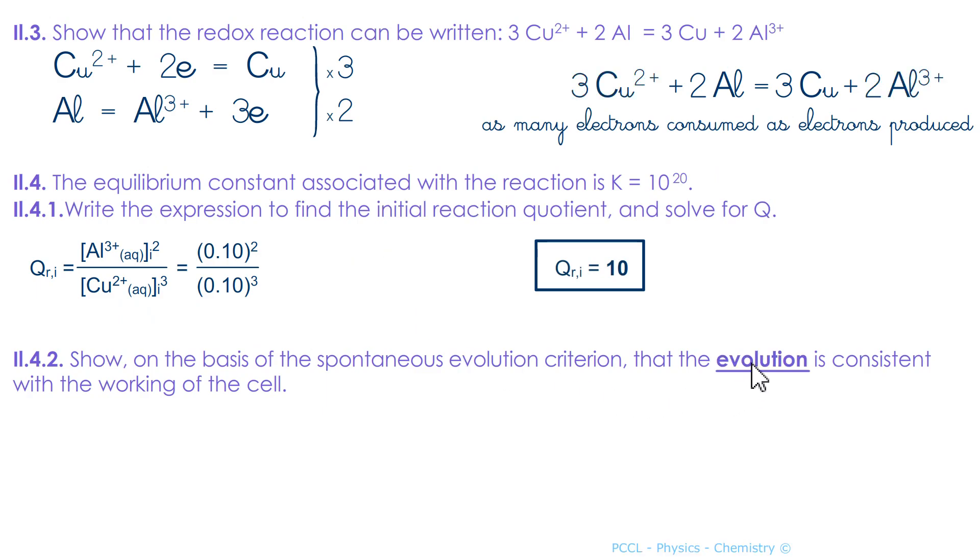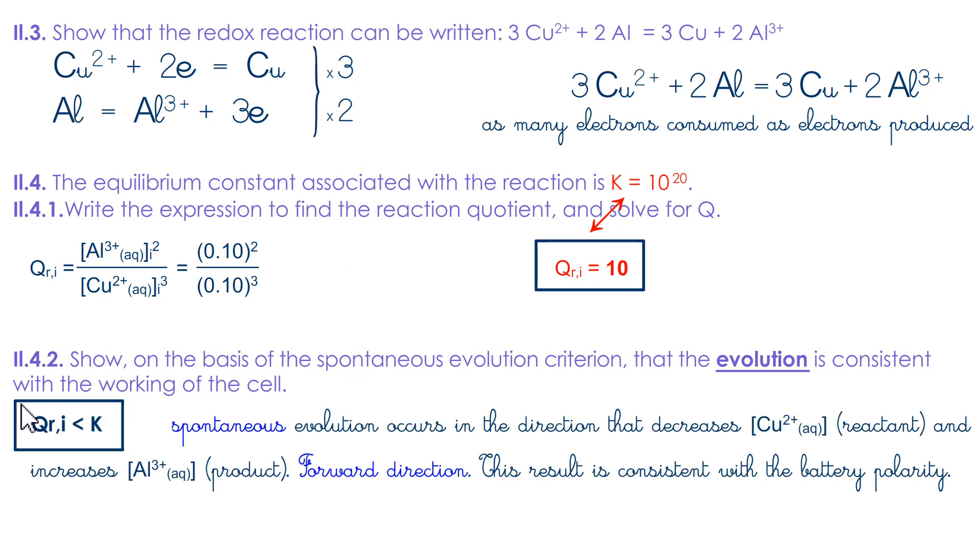You are then asked, in which direction will the equilibrium shift? You have to compare these two sizes. This one is given to you, and that one you just found, that's 10. 10 is less. As the reaction coefficient is lower, it wants to reach the equilibrium constant. The reaction will evolve in the forward direction. The spontaneous evolution, that which decreases the reagent and increases the product. This result is therefore consistent, as we have already said, with the polarity of the battery.